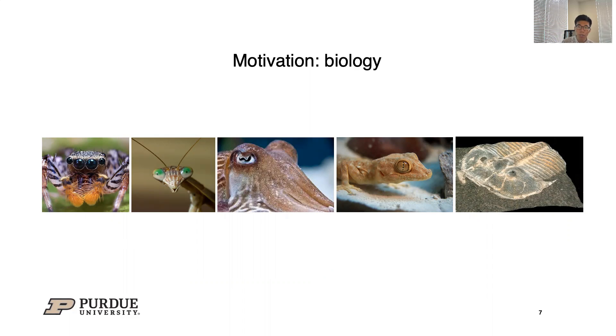Small animals, especially invertebrates, have specialized optics and neural wiring synergized together to accurately perceive scene information, while at the same time being extremely small and low power.